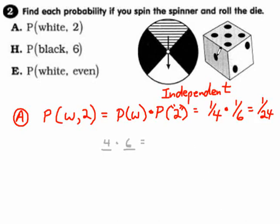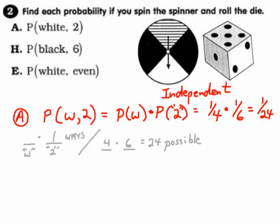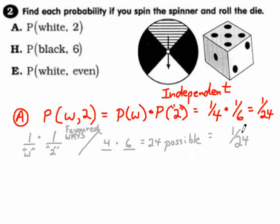That gives 1 out of 24. Or you could use the counting method: total possible outcomes = 4 choices times 6 choices = 24. Favored outcomes: one white and one two, so one favorable outcome out of 24. Both methods give 1/24. Most people prefer just using the fractions.